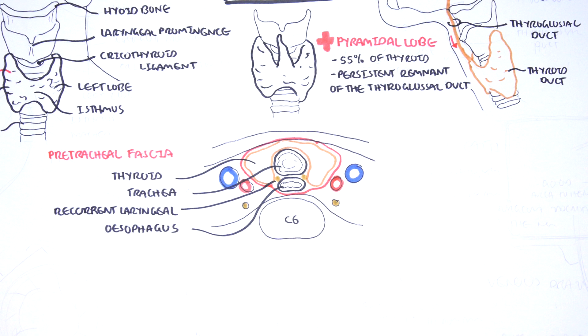The thyroid gland stands at the vertebral level C5 and T1. Here is a cross section of the C6 vertebral level.